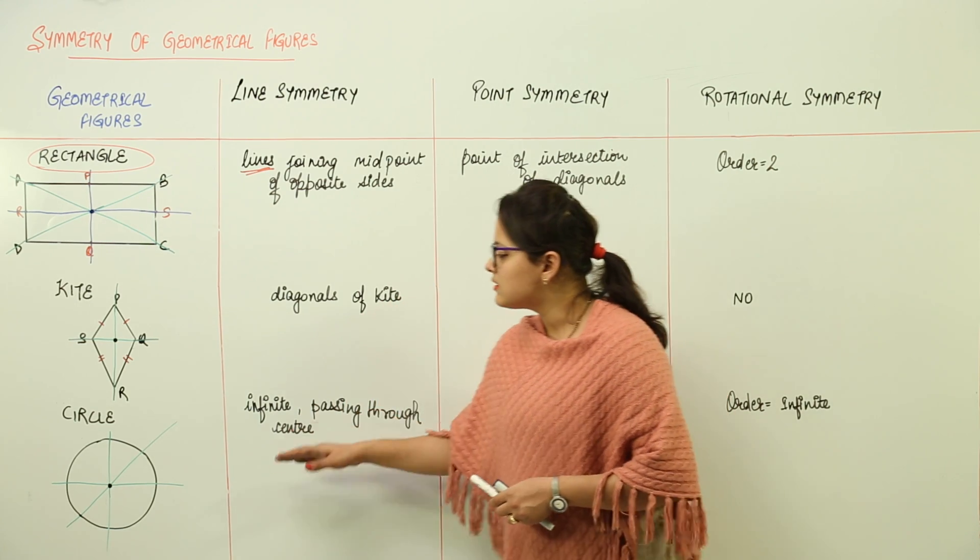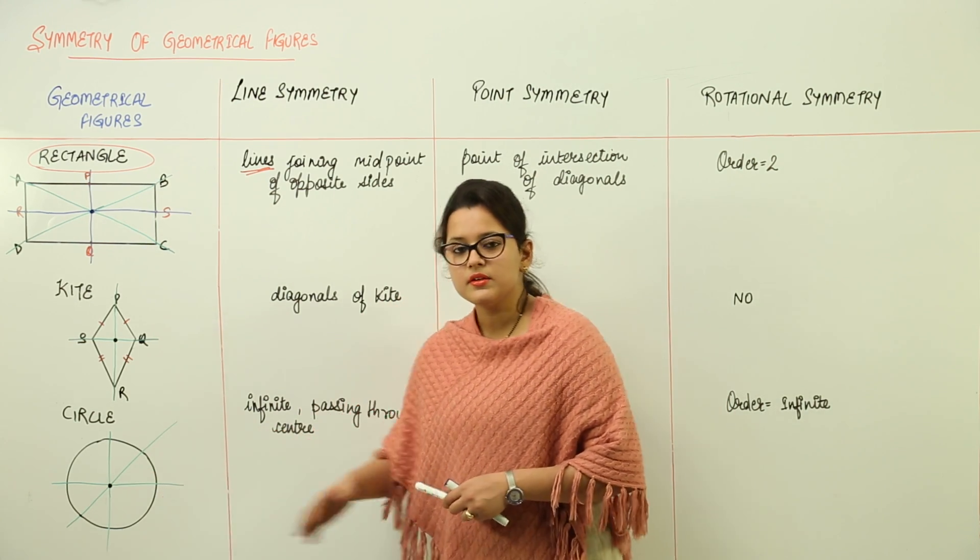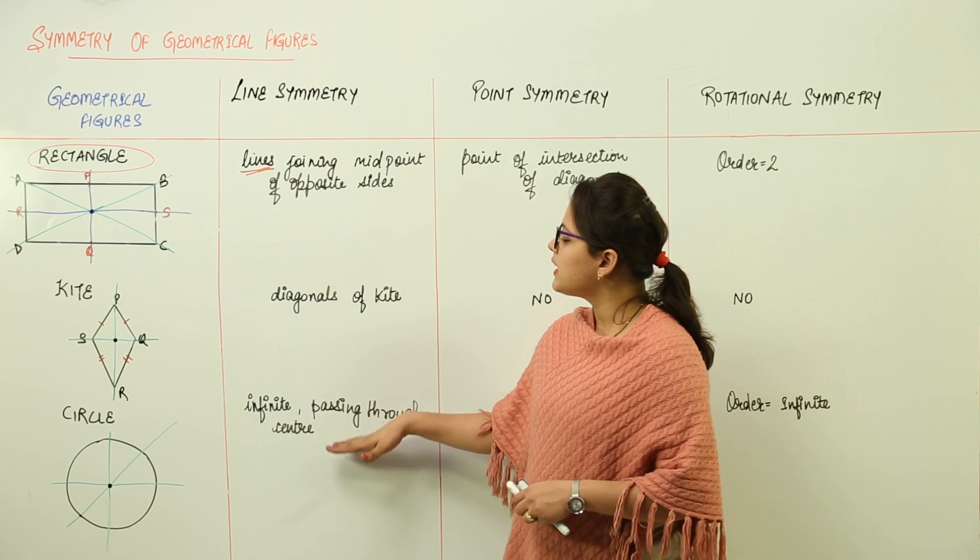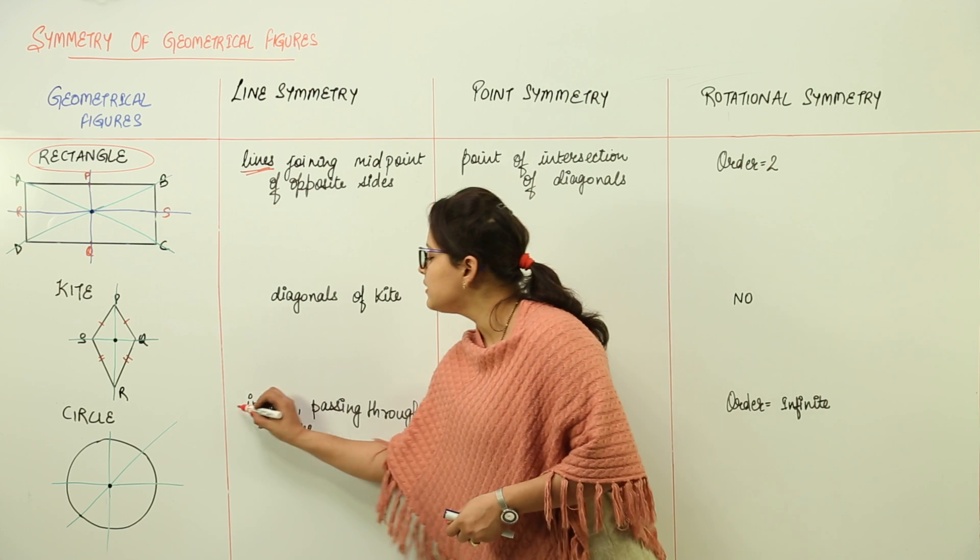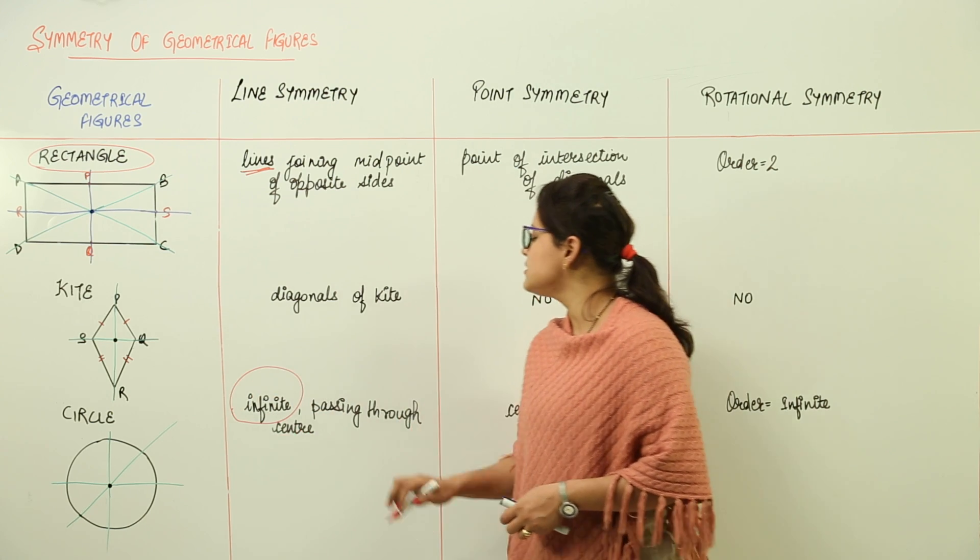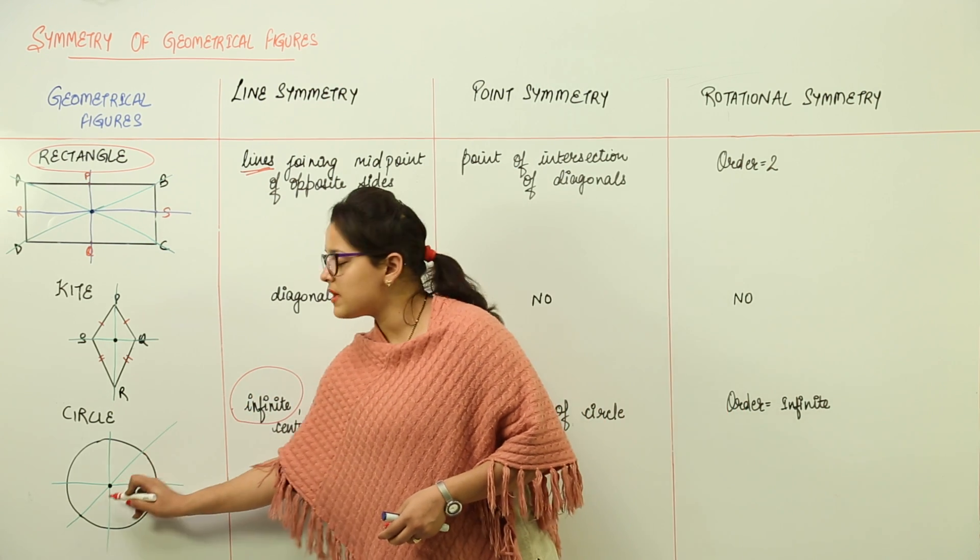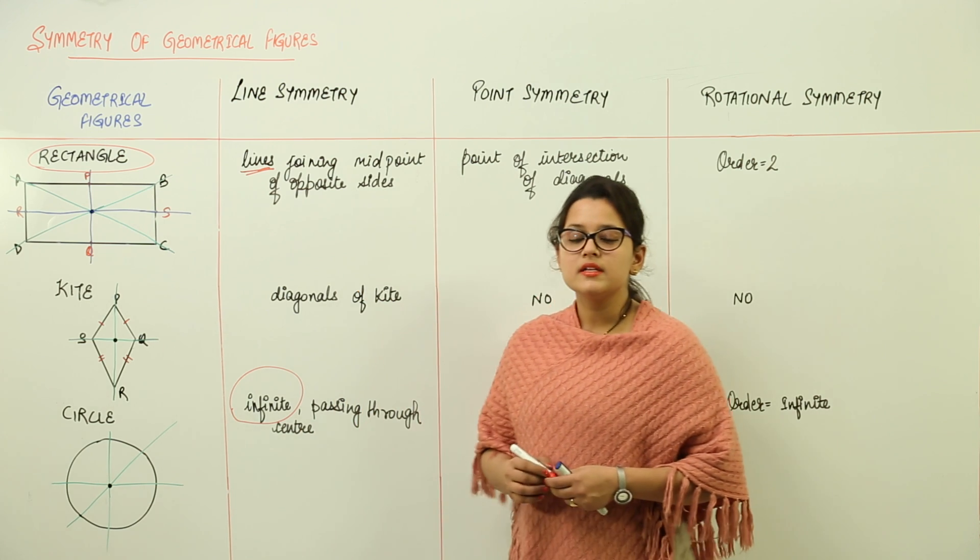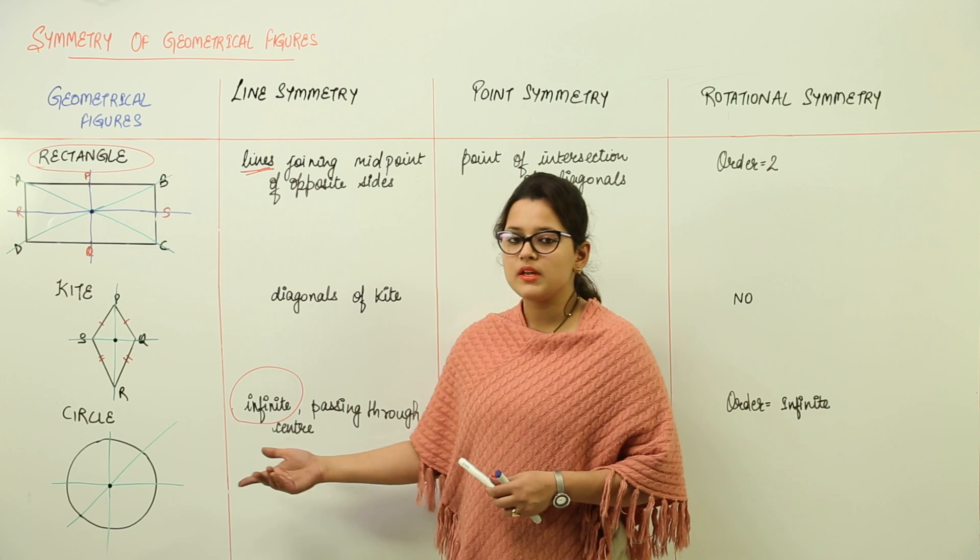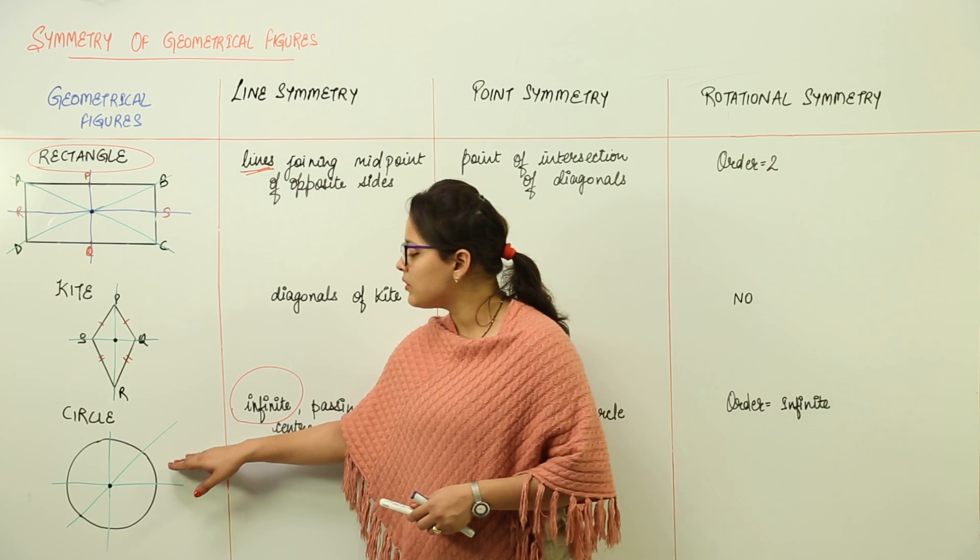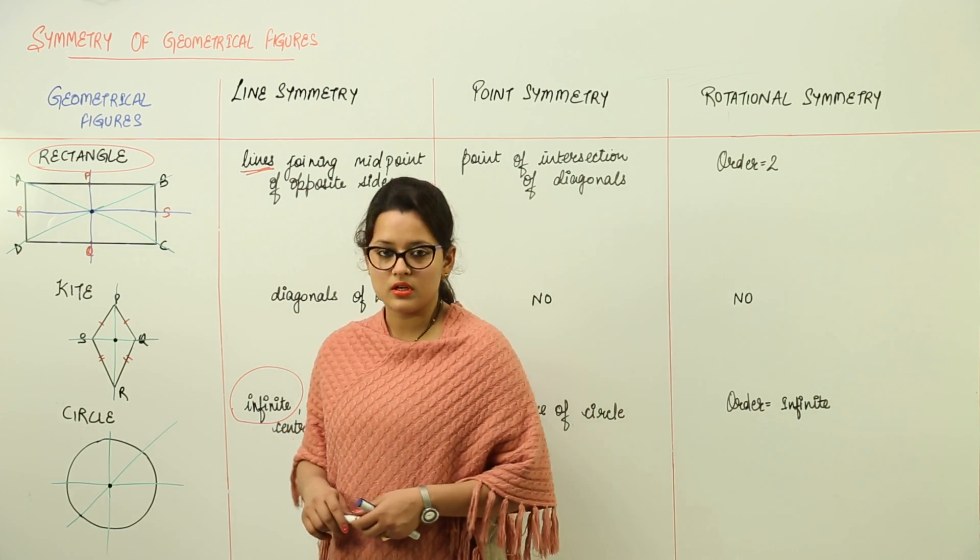We have the next as circle. Circle has a center. So how many line symmetries are possible for case of circle? We have infinite cases possible because there can be infinite lines passing through the center and they will be having symmetry about that line. So we have infinite number of line symmetries possible for circle.